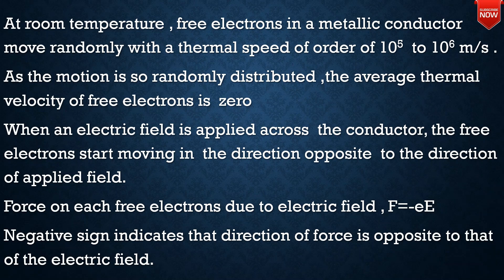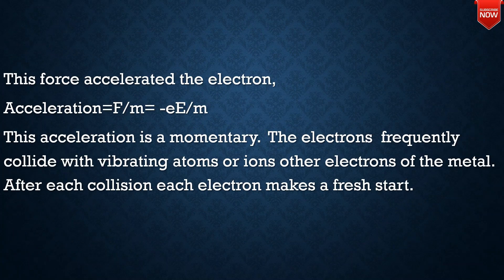Here, small e indicates the electron charge and capital E is the electric field. The negative sign indicates the direction of force is opposite to the electric field. This force accelerates the electron. The acceleration a is equal to F divided by m, that is equal to minus eE divided by m. This acceleration is momentary.